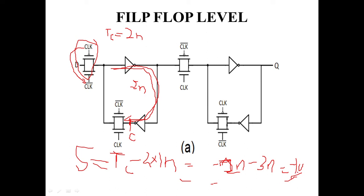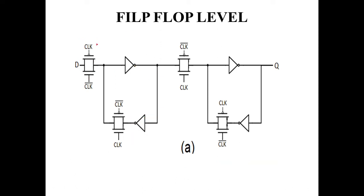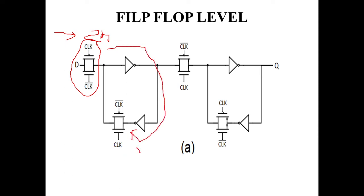Negative setup time will be quite confusing because it is not likely to occur practically. The reason is that the clock-to-clock-bar transition itself takes two nanoseconds, so it is not feasible for data to arrive three nanoseconds earlier than that transition. Therefore, practically our setup time will be positive only, or it can be zero if we consider data transmission delay and inverter delay to be equal.